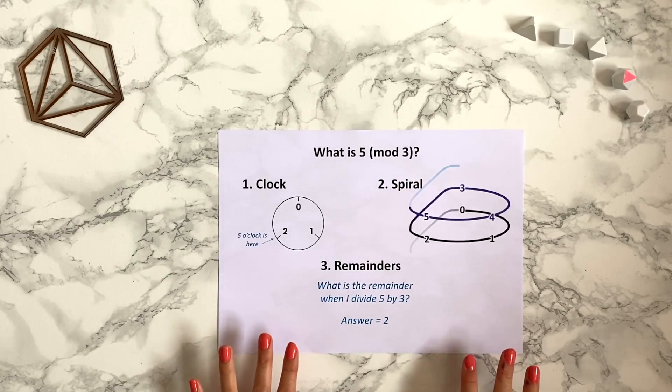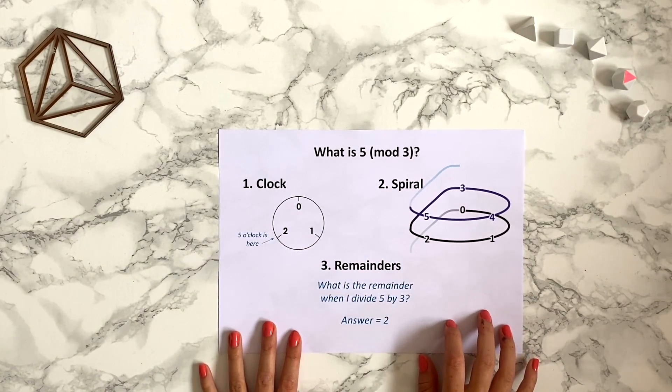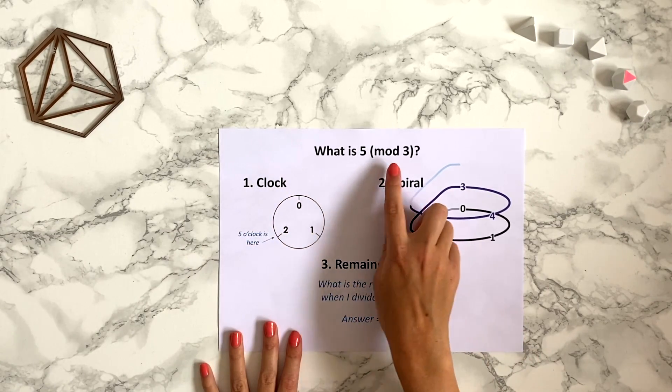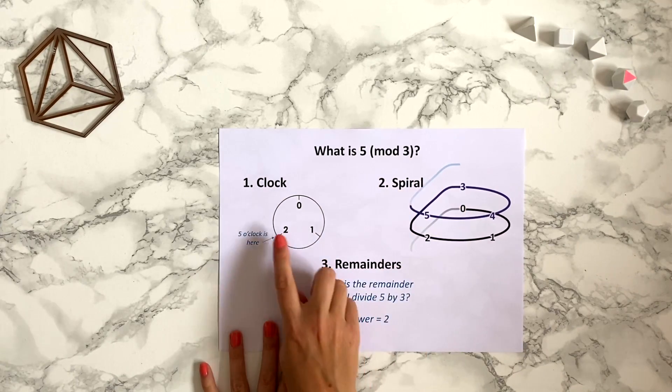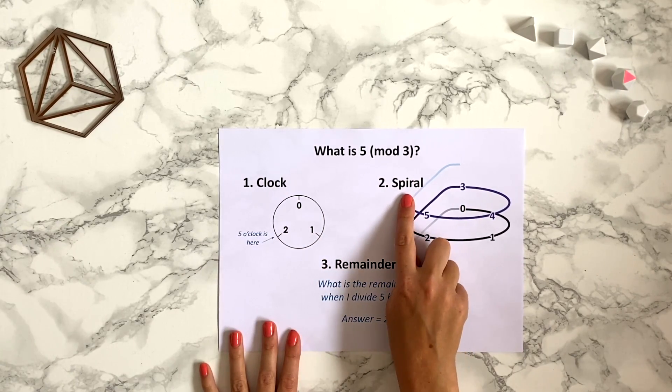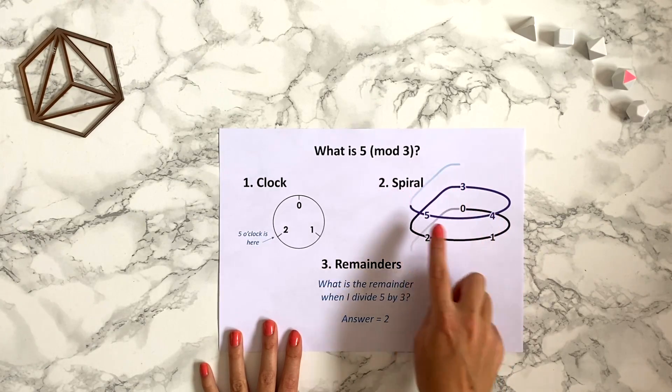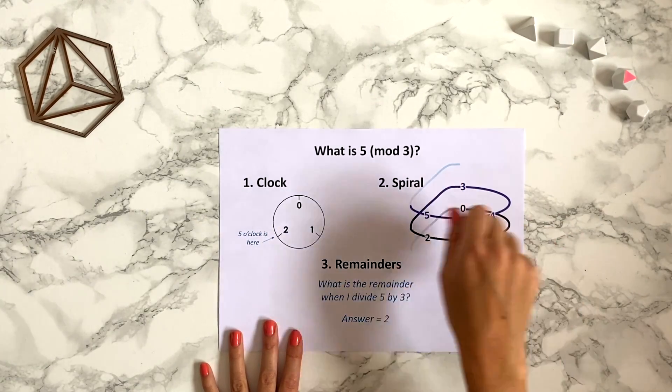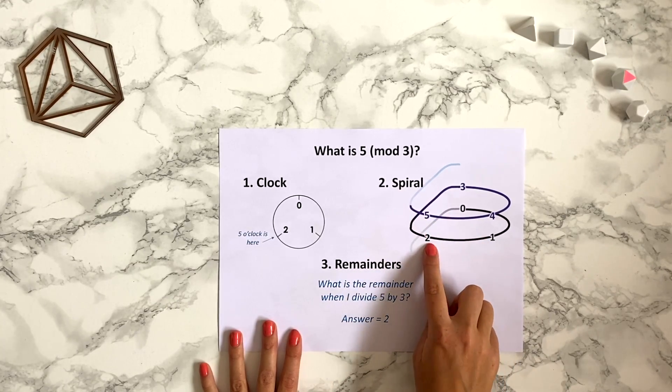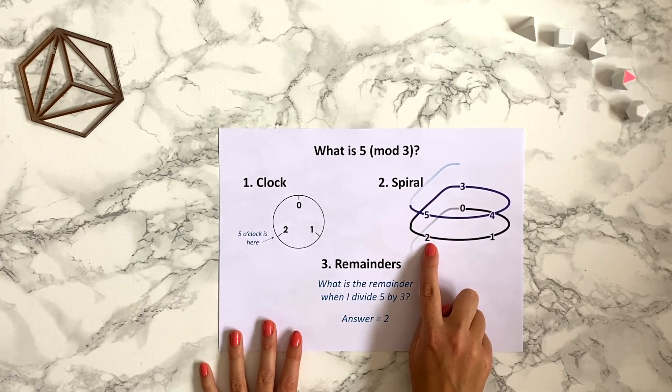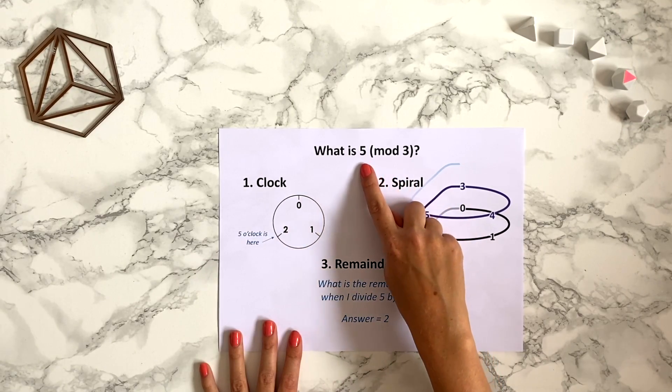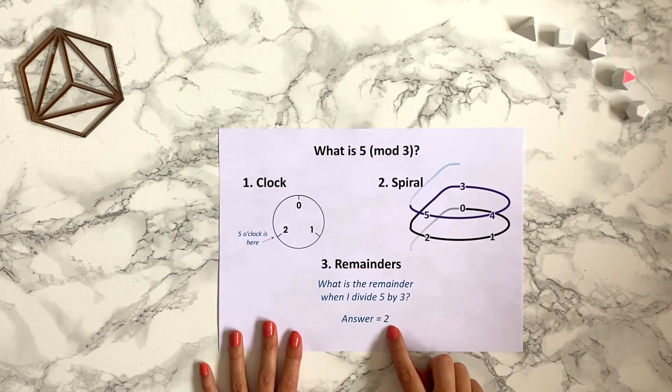So to recap, we have three different ways of thinking about modular arithmetic so far. Our first method is the clock method, so if we're trying to find 5 mod 3 we can think where would 5 o'clock appear on a 3 hour clock. We also have our spiral method, so we can think where would 5 appear if we coiled around the number line every three numbers. Or we can think about remainders. What's the remainder when I divide 5 by 3, and the answer again is 2.